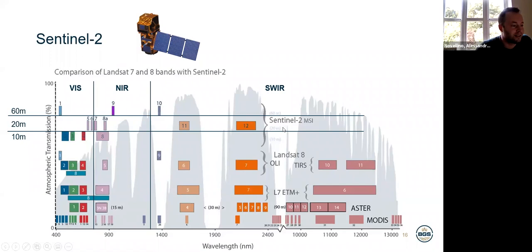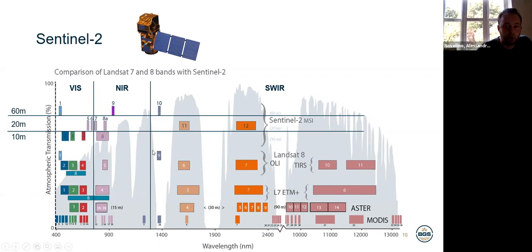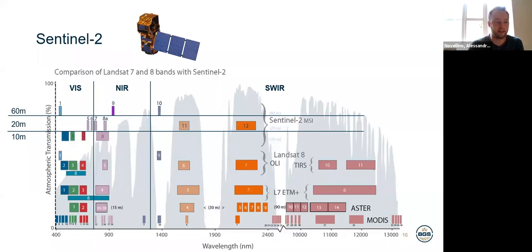This is a comparison of Sentinel-2 with other satellites such as Landsat 8. The bands of Sentinel-2 have been built in a way that they overlap with some of the Landsat 8 bands. This will make any comparison across years and between the two sensors easier. So even new satellites are built so that their central band wavelengths correspond to previous satellite missions, making any comparison easier.